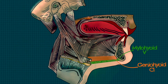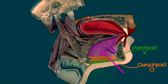Next, we have the geniohyoid, outlined here in orange. This is supplied by fibres from the first cervical nerve which travel alongside the hypoglossal nerve. The next muscle, outlined in pink, is the genioglossus, and this is supplied by cranial nerve 12, also known as the hypoglossal nerve.